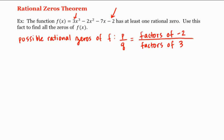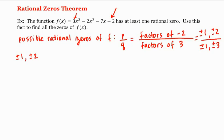So what are the factors of negative two? They're plus or minus one or plus or minus two, divided by the factors of three, which are plus or minus one or plus or minus three. Doing all possible divisions: plus or minus one over plus or minus one gives plus or minus one; plus or minus two over plus or minus one gives plus or minus two; plus or minus one over plus or minus three gives plus or minus one-third; and plus or minus two over plus or minus three gives plus or minus two-thirds. So we have eight possible candidates for rational zeros.